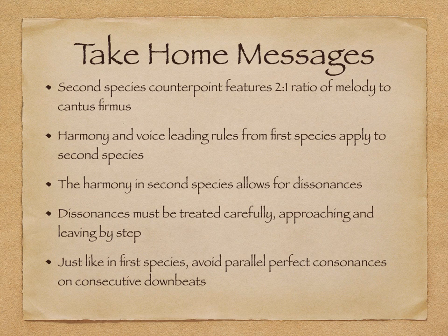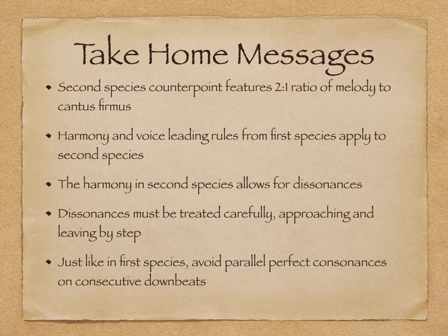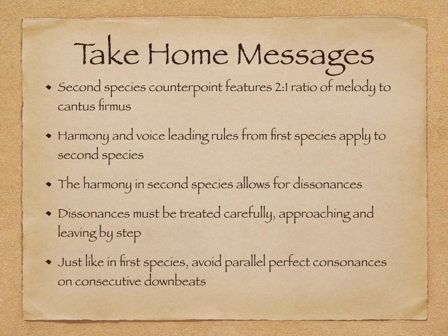We learned in this video that second species counterpoint features a 2-to-1 ratio of melody to cantus firmus. The harmony and voice leading rules from first species also apply to second species, except now the harmony allows for dissonances. When writing dissonances, they must be treated carefully, approaching and leaving them by step. Finally, just like in first species, we want to avoid parallel perfect consonances on consecutive downbeats. That is all for now. Thanks for watching!